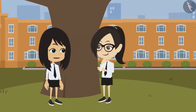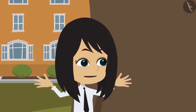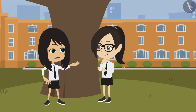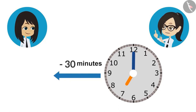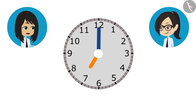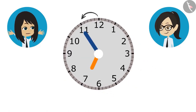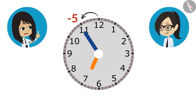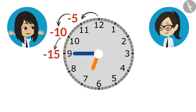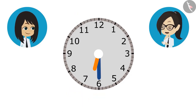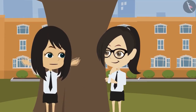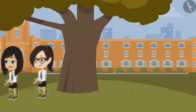To reach school at 7 o'clock in the morning, and it takes 30 minutes from home to school — what time do we leave from home? First we draw 7 o'clock on the clock. Then we subtract 30 minutes: from 12 to 11 is 5 minutes, to 10 is 10, at 9 is 15, at 8 is 20, at 7 is 25, and at 6 is 30 minutes. This means we have to leave home at 30 minutes past 6 o'clock.